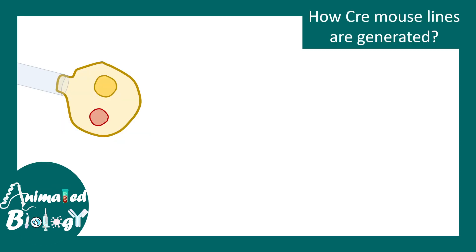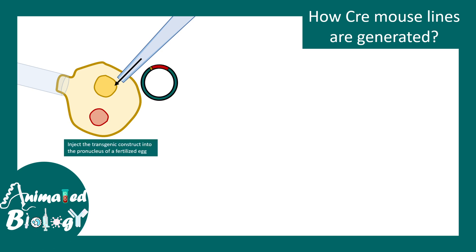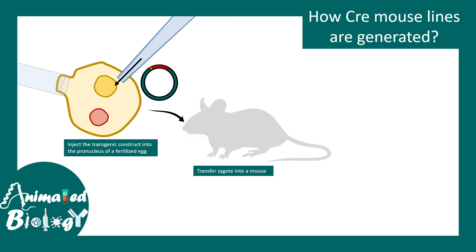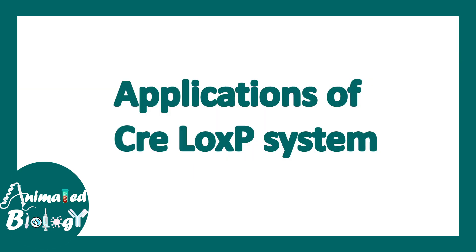Let's see how the Cre mouse and the LoxP mouse are generated. The Cre construct is injected into the pro-nucleus of a fertilized egg. The Cre construct has the Cre recombinase sequence underneath the tissue-specific promoter, and it is loaded onto a transposon-based vector so that it can stably integrate into the genome at very early stages. The injected zygote develops into a normal embryo, ultimately giving rise to the transgenic Cre mouse. The transgenic line is then crossed and maintained as a Cre stock. Similarly, a transgenic approach is used to generate the LoxP mouse.